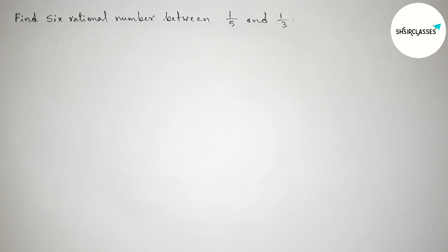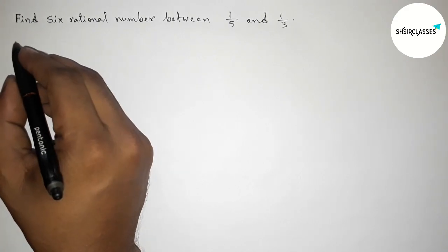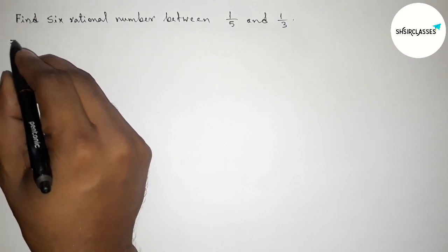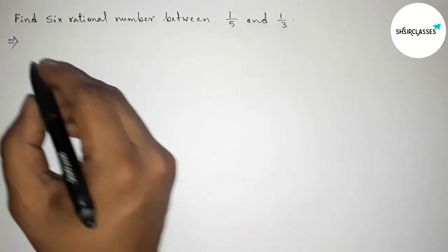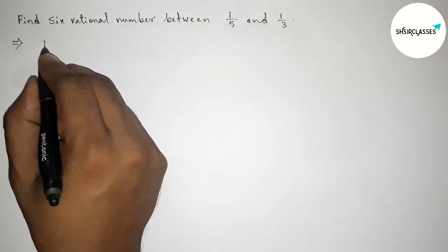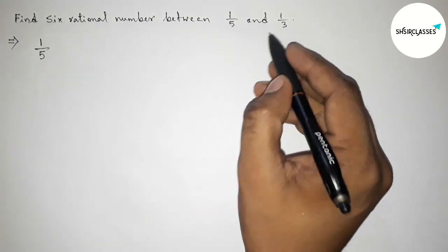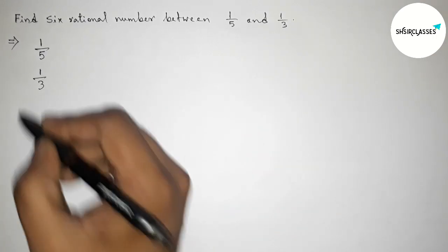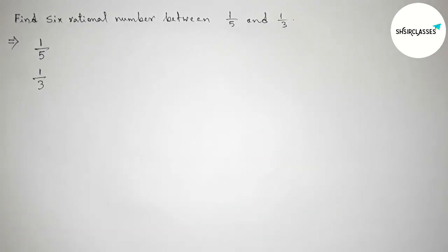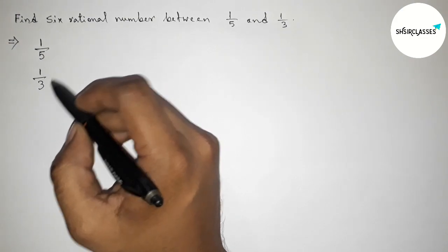First of all, let us solve this problem. Here, given two rational numbers: the first one is 1/5 and the second one is 1/3. The denominators of both rational numbers are not the same.